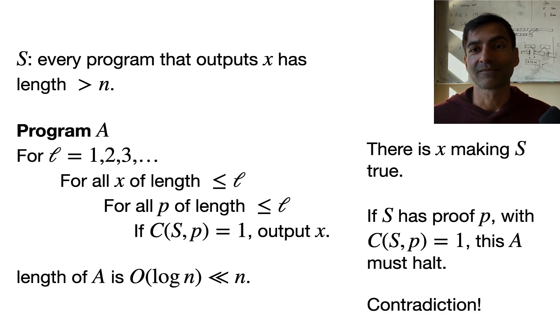So that's a contradiction. The only possibility here is that the x that make S true do not have proofs that would convince the proof checker that they are true. That the statement S is true.